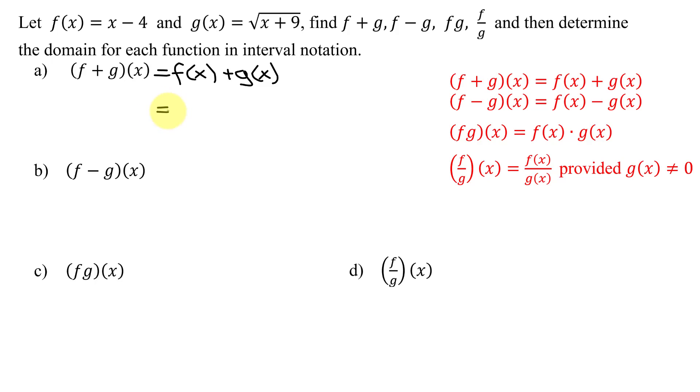Now, all I need to do is substitute in the definitions of my functions. I always put them in parentheses to start with in case I need them. So I have parentheses with x minus 4 plus parentheses the square root of x plus 9. I'm just adding all these terms. I have unlike terms, so my answer is just x minus 4 plus the square root of x plus 9.